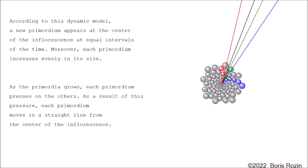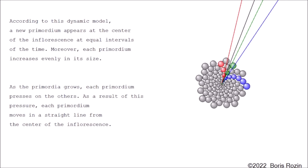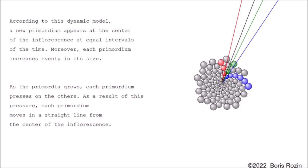As the primordia grow, each primordium presses on the others. As a result of this pressure, each primordium moves in a straight line from the center of the inflorescence.